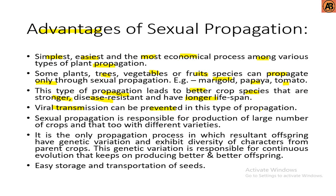Viral transmission can be prevented in this type of propagation. Sexual propagation is responsible for the production of a large number of crops with different varieties. It is the only propagation process in which the resultant offspring have genetic variation and exhibit diversity of characters from parent crops. This genetic variation is responsible for continuous evolution, producing better and better offspring. Seeds also allow easy storage and transportation.